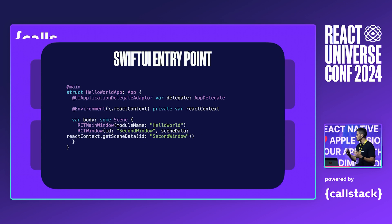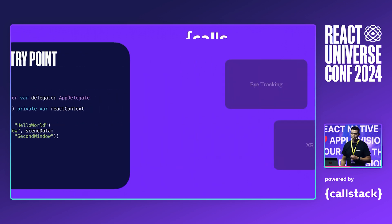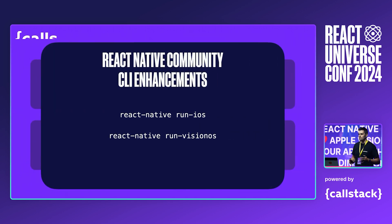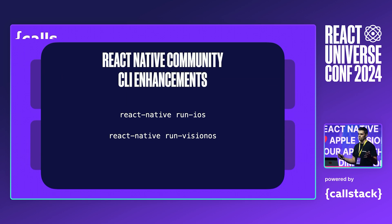This change allows us to leverage the full capabilities of the Vision OS SDK. We implemented a set of reusable utilities that out-of-tree platforms can use to implement their own CLI commands. Thanks to this, we can now run React Native run Vision OS.